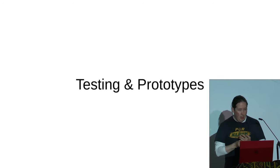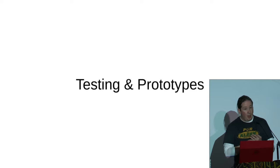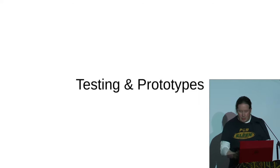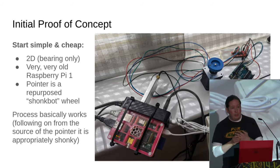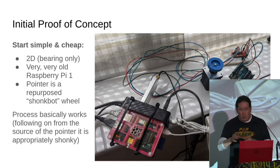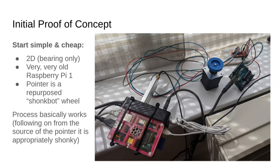Once I had those ideas in mind, I started looking into prototypes and testing. I started out with something very simple — it was 2D only, just pointing in the direction of the aircraft. I repurposed an old ShonkBot wheel, which is a project some people I know built as the simplest possible robot you could take into schools. It basically showed that it worked. It was, appropriately for its source, very shonky — but it did work. The pointer is literally just an arrow drawn on that blue wheel.